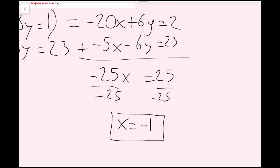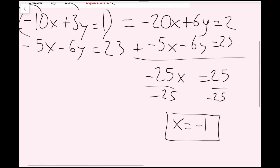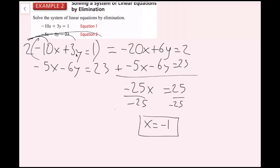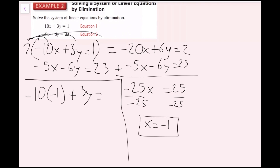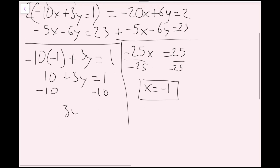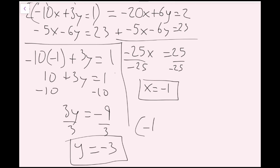Now I plug x equals negative 1 back into the original equation negative 10x plus 3y equals 1. That gives negative 10 times negative 1 plus 3y equals 1, which becomes positive 10 plus 3y equals 1. Subtracting 10 from both sides gives 3y equals negative 9. Dividing by 3 gives y equals negative 3. So the ordered pair solution is (negative 1, negative 3).